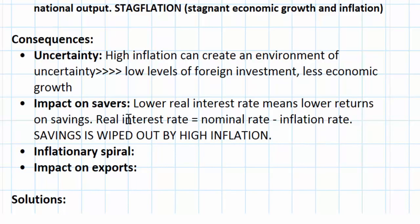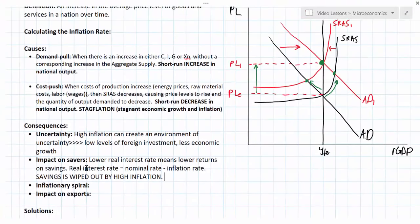As long as inflation is kept low and stable, interest rates tend to be higher than inflation rates and the value of people's savings increases over time. But if inflation increases at a high rate, as we can see in the graph on the right, this can lead to a decrease in the real interest rate and lower valued savings among the nation's households over time.